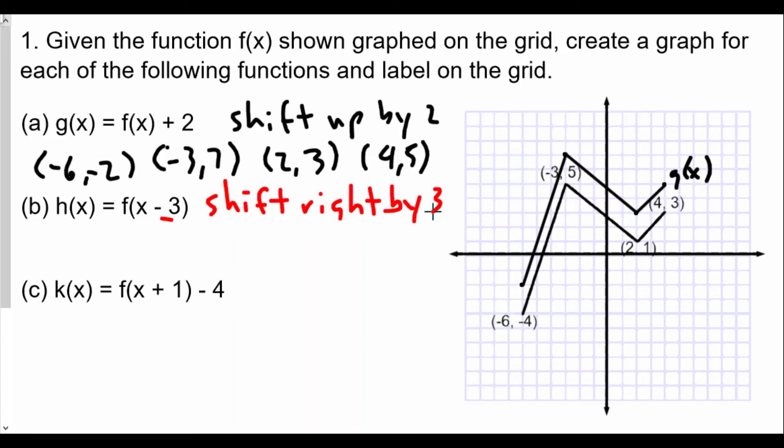So -6, -4 becomes -3, -4. And then -3, 5 becomes 0, 5. So we're just adding 3 to the x value for each of those original coordinates. 2, 1 becomes 5, 1. And 4, 3 becomes 7, 3, because 4 plus 3 is 7.